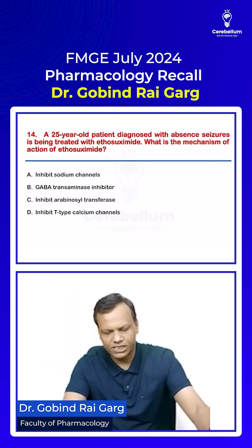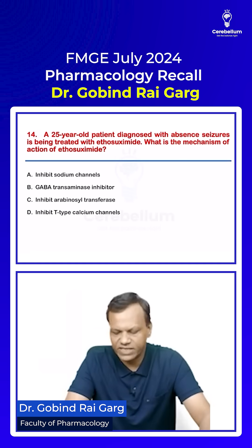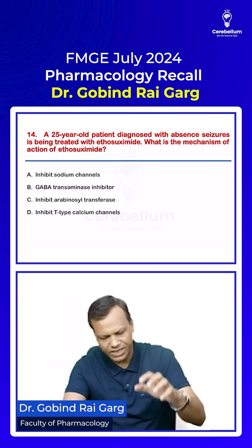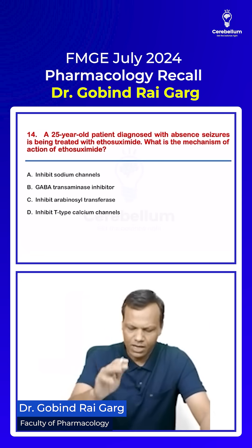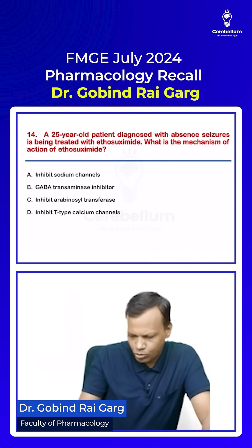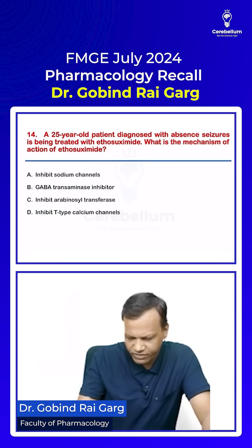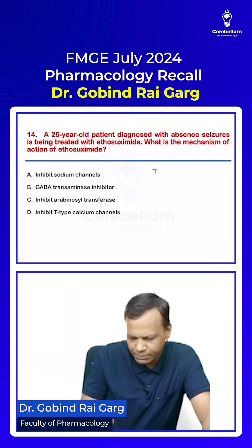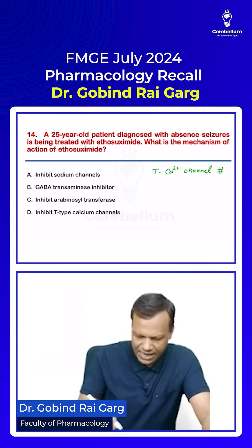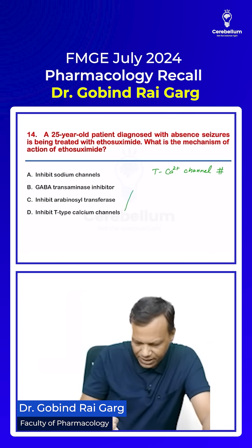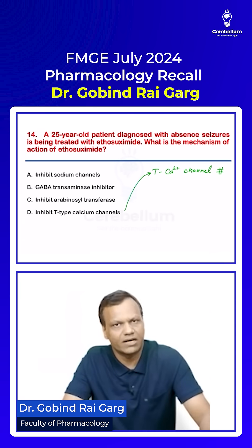A 25-year-old patient diagnosed with absence seizures is being treated with ethosuximide. What is the mechanism? Absence seizures occur due to overactivity of T-type calcium channels. So if any drug inhibits T-type calcium channels, it can be used in absence seizures, and that is what ethosuximide does — it is a T-type calcium channel blocker.